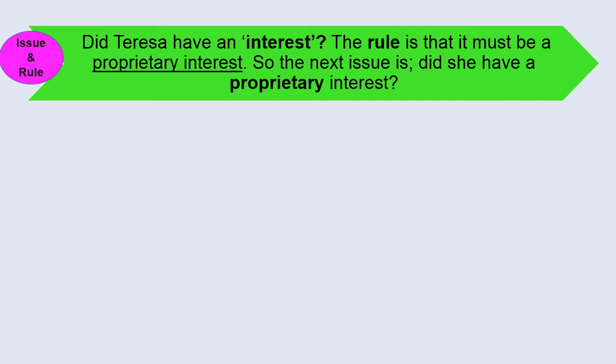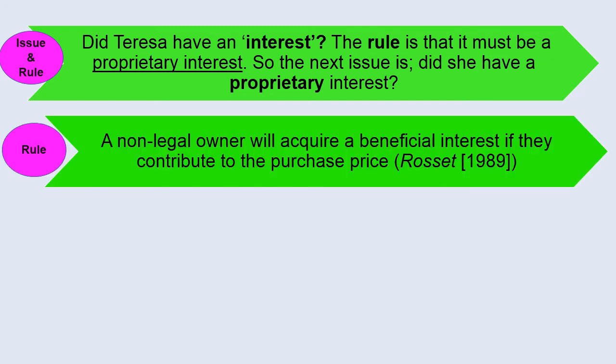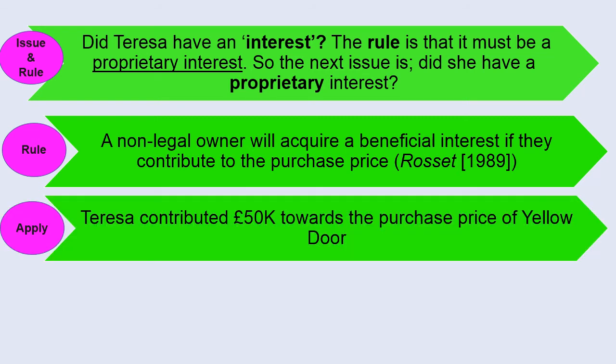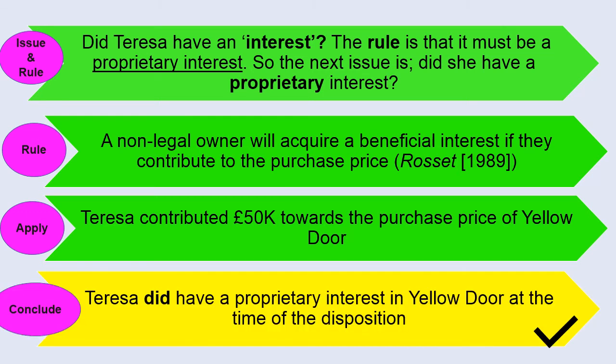And we start by looking at the general rule and we will deal with each requirement in turn. So the first issue is does Teresa have an interest? And the rule decided by the courts is that the interest must be a proprietary interest. So the issue becomes did Teresa have a proprietary interest in yellow door? Now the rule that I applied is taken from Lloyds Bank and Rosset, which is that a non legal owner will acquire a beneficial interest in land if they contribute towards the purchase price. So when we come to apply that rule to the facts, well, we can say that Teresa contributed £50,000 towards the purchase price of yellow door. And we can then conclude that Teresa did have a proprietary interest in yellow door at the time of the disposition. Now, if you watch all my videos on this particular topic, you'll see that in video four, you'll have already dealt with this point earlier in your answer. So I'd strongly recommend that you look at all the videos in the series, particularly the last video.